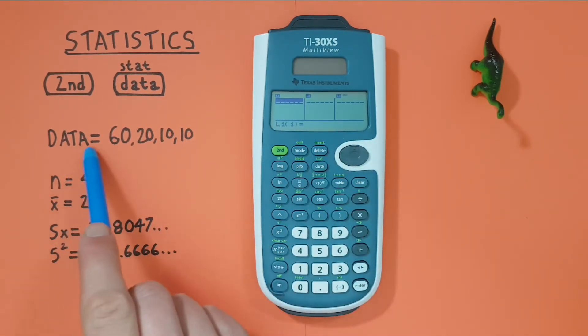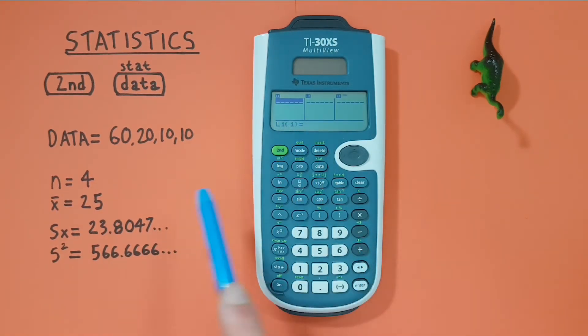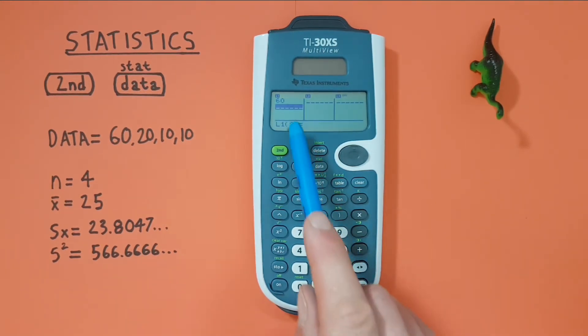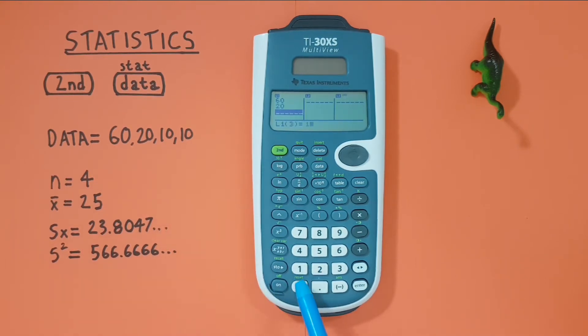We'll enter this data into list one which is the first list on our left. So our first variable is 60 and press enter and you see the 60 appears in our list. Next is 20 enter and we have 10 and 10 again. Our variables have now been entered and we can press clear to exit this screen.